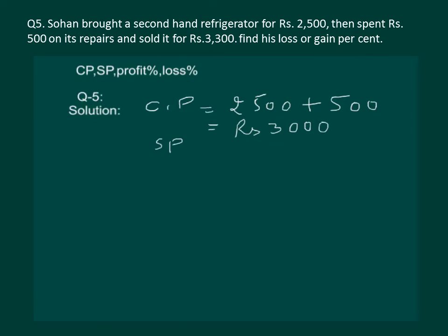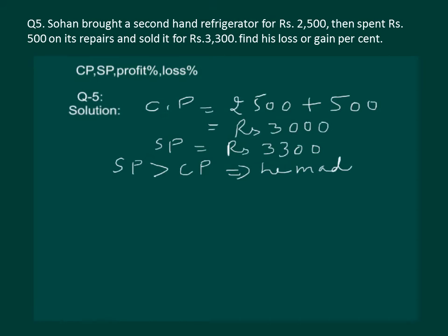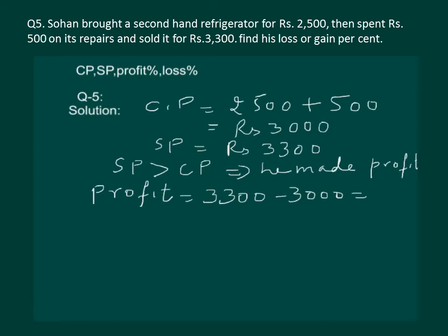The selling price is given as rupees 3300. Clearly, the sale price is greater than the cost price, which implies there is a profit — he made a profit. Now we have to calculate how much profit he got. Profit equals sale price minus cost price, that is 3300 minus 3000, which comes out to be rupees 300.